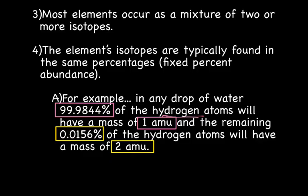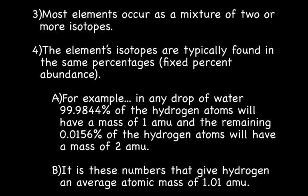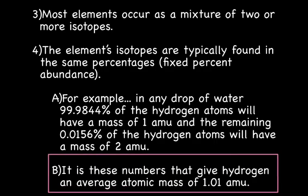Because the mass of hydrogen on the periodic table is so close to 1, most hydrogen atoms in the world weigh 1 AMU — meaning one proton and no neutrons. Very few have a mass of 2 AMU with one proton plus one neutron. This is why hydrogen has an average atomic mass of approximately 1 AMU.